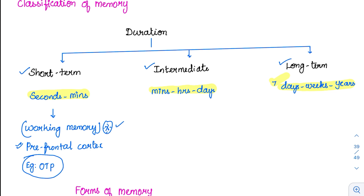Another example: whenever in your childhood your mom asked you to purchase three things, you would keep repeating those things until you reached the shop and told him. Once you told him, you forget it. So these are the examples for working memory.